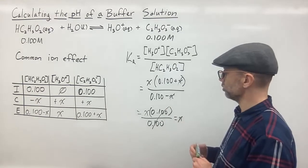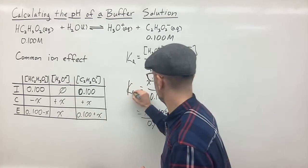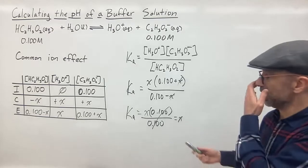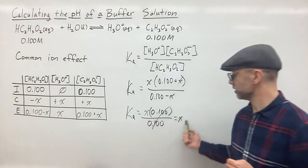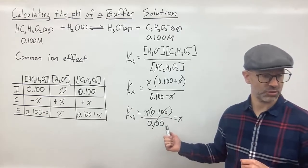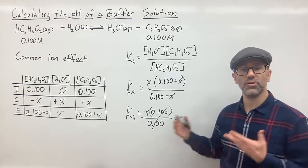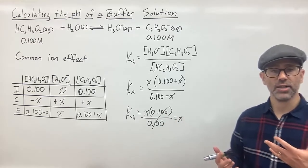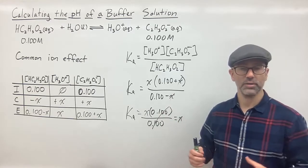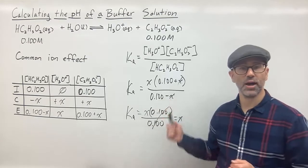So x ends up equaling, this is our Ka value. And so whatever the Ka of acetic acid is, we can solve for x. And so we get our Ka value for that. So this is the way that you would solve your buffer solution for this type of problem.